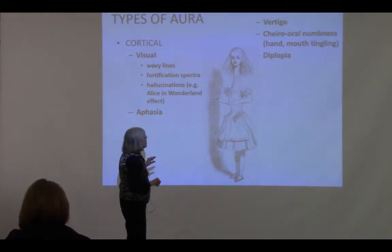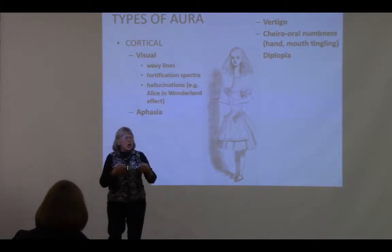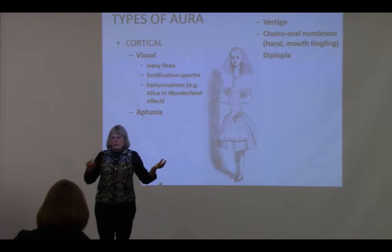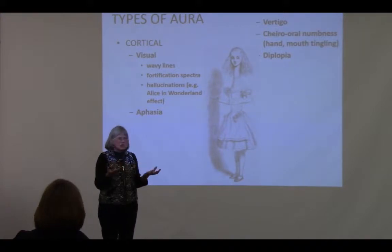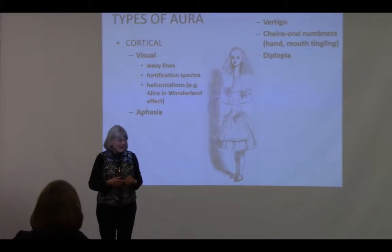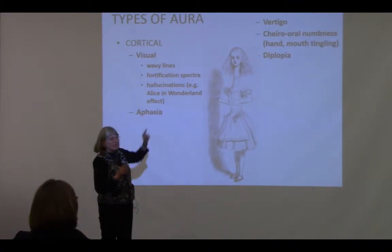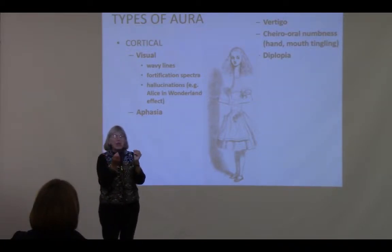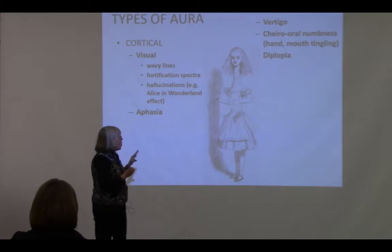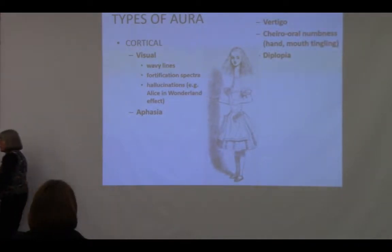You may remember the newscaster who got on the air and started talking incoherently — everyone thought she'd been drinking, but it was her migraine aura. She became aphasic, then got a terrible headache. Other kinds of auras include vertigo, numbness of the hand or mouth, and even double vision. Auras can take many forms, but the most common is the visual aura.